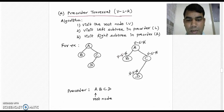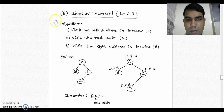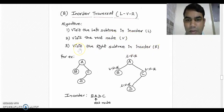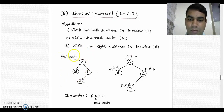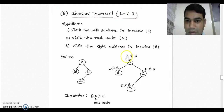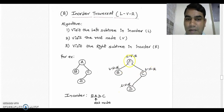Now we will see in-order traversal. In in-order traversal, the algorithm has three steps: first we visit the left subtree in in-order, then we visit the root node (V), and finally we visit the right subtree in in-order fashion. This is also a recursive algorithm. The shortcut for in-order is L, V, R. We write LVR on top of each and every node in the given binary tree.